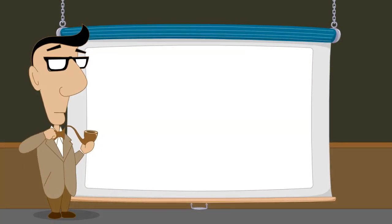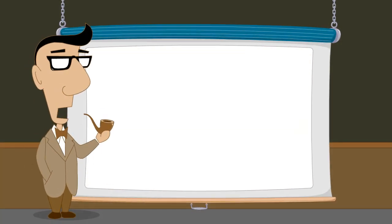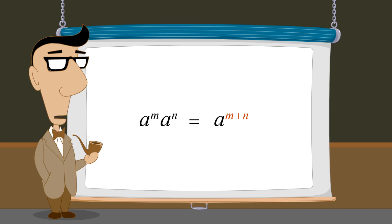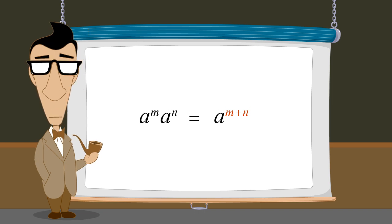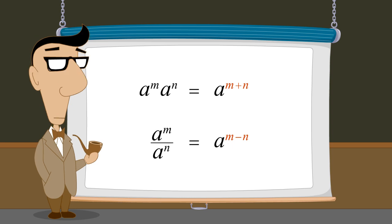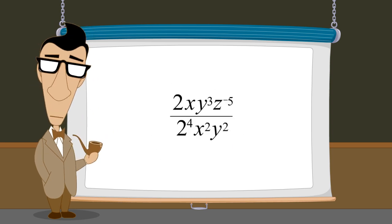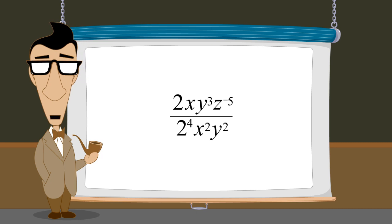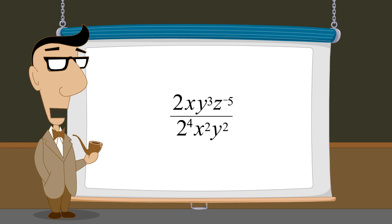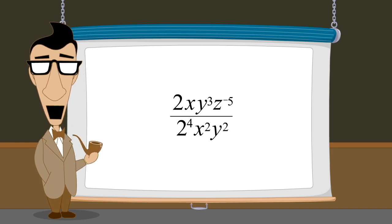So far, we have used the rules of exponents to simplify exponential expressions with multiplied terms and divided terms, as long as the terms have the same base. However, exponential expressions often contain a variety of terms with different bases, which are multiplied and divided. In our next lecture, we will learn how to simplify any expression of this type.